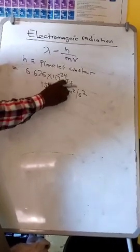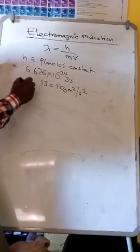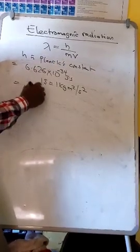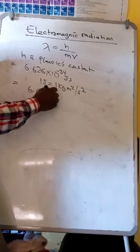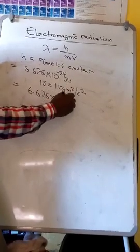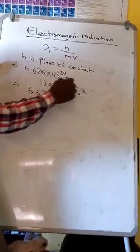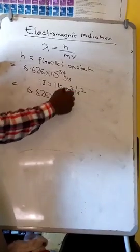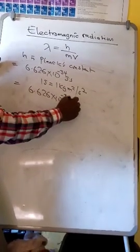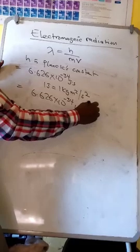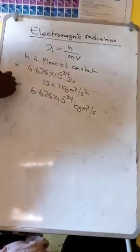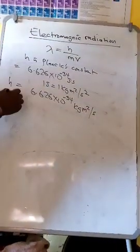So if we replace joules with this, then Planck's constant will be 6.626 times 10 to the minus 34, the seconds cancel, so we have kg meter squared per second. This is the h value we shall use in our calculations.